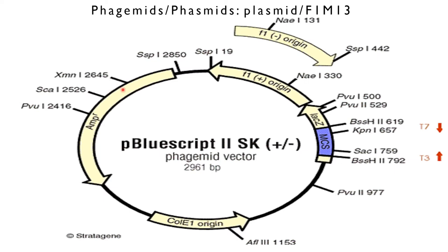Phagemid contains an origin of replication for double stranded replication as well as an F1 origin site to enable single stranded replication and packaging into phage particles. Many commonly used phasmids contain an F1 origin and are thus phagemids.